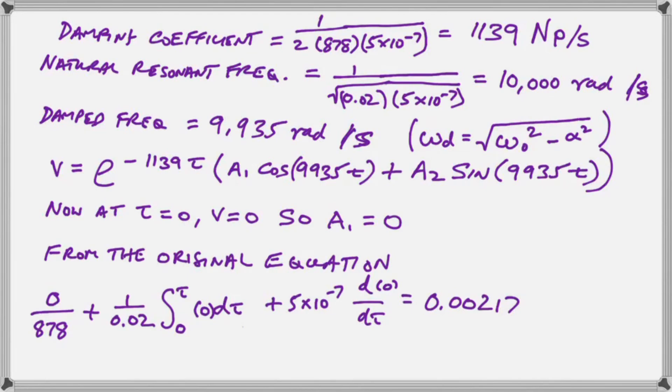Now in order to find A2 we go back to our original equation and we realize that at t equals 0 when V also equals 0 our leftmost member drops out there is no voltage across the resistor our second member drops out because there is nothing to integrate we have 0 at the top and 0 at the bottom and all we're left with is our differential and it must equal 0.00217 so we divide by our capacitance in order to isolate our differential as shown and we have our first derivative as 4340 volts per second that's the inrush into the capacitor at the beginning of the operation.